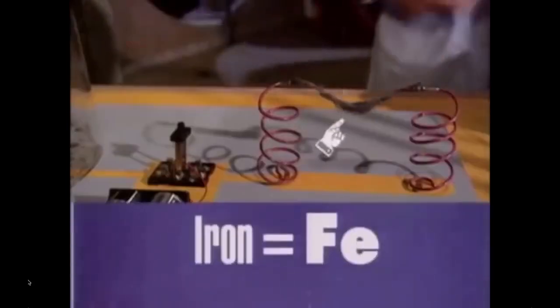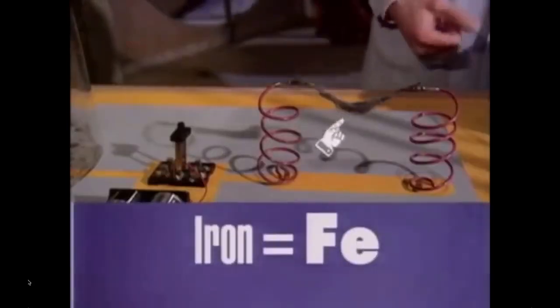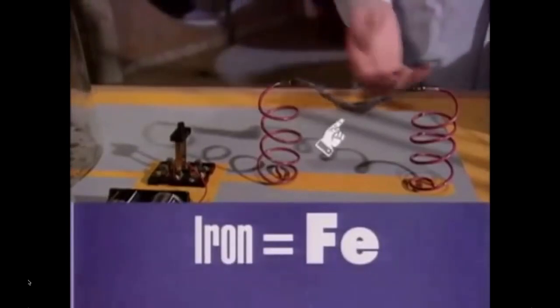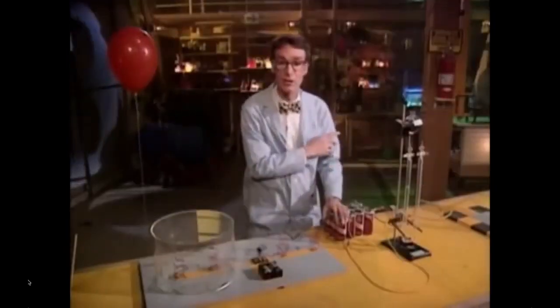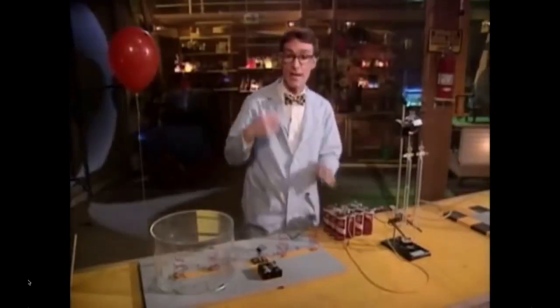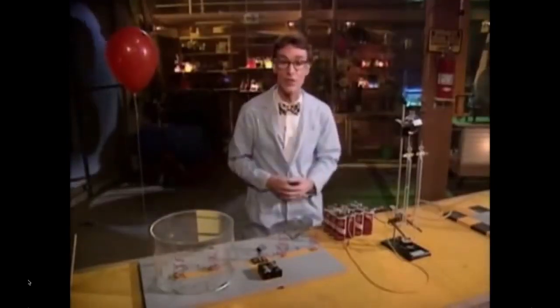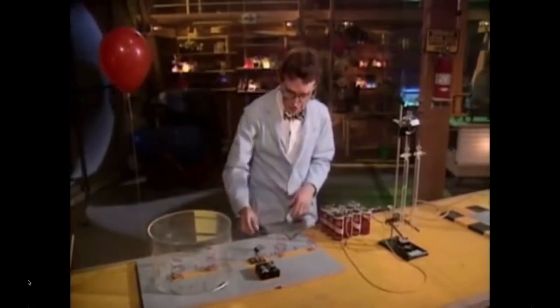Oxygen is in the air we breathe. It's what makes iron rust, and it makes our blood turn red. Right here, we have a piece of iron — which is steel wool — and we're going to run some electrons through it and make it react with the oxygen in the air.